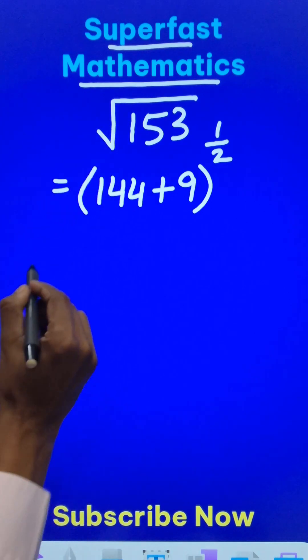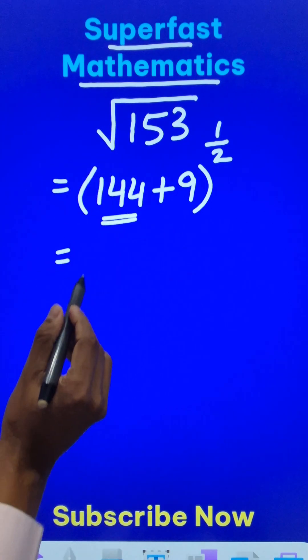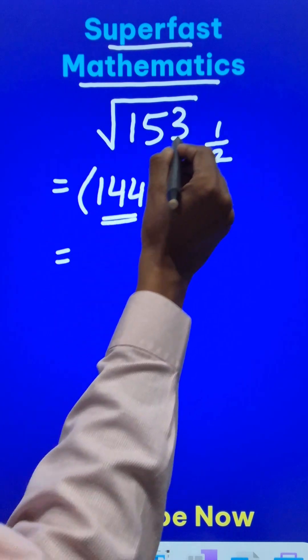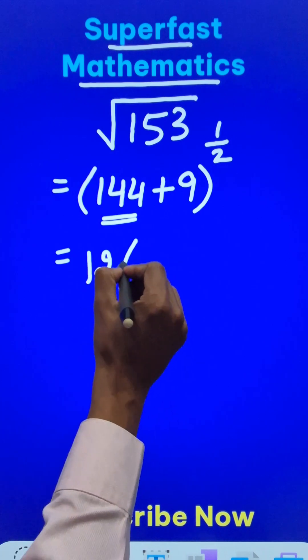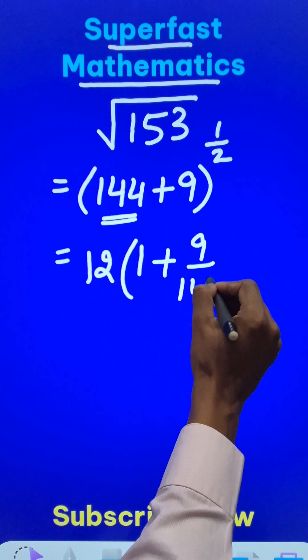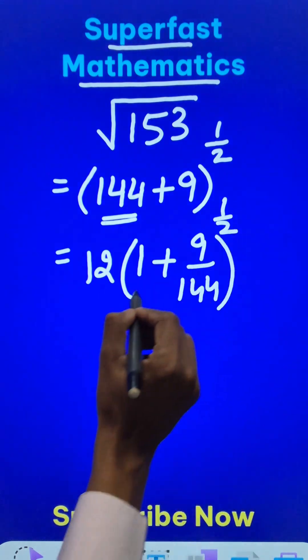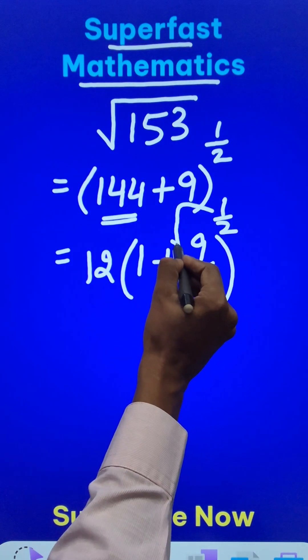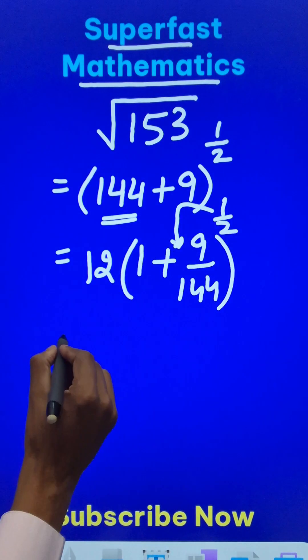Now if I take out this 144 as a common factor, 144 power half is 12. Because I have taken 144 out, this will become 1 and 9 will get divided by 144. All I need to do is bring this exponent here to get the approximate value of the square root.